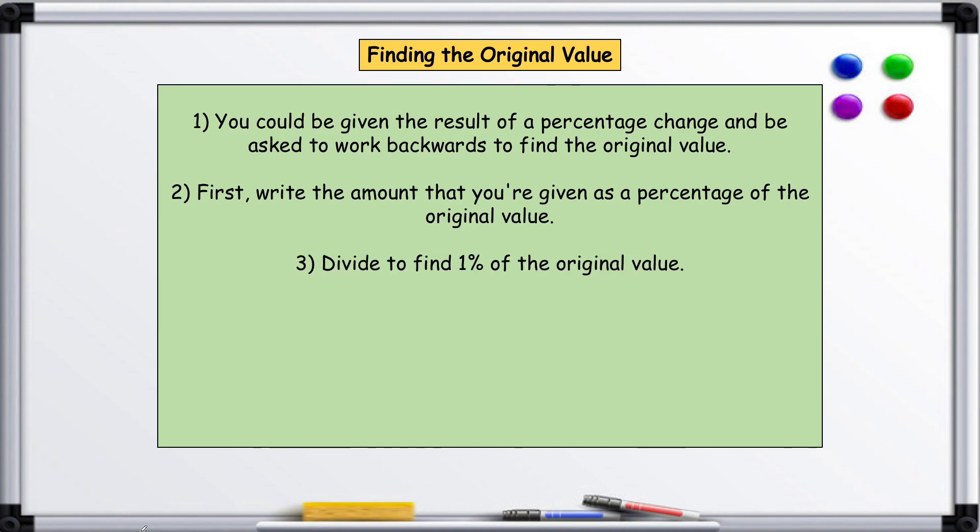Divide to find 1% of the original value, then multiply by 100 to give the original value. This all sounds very complicated, but once we dive into some examples, you'll spot how to do this quite easily.